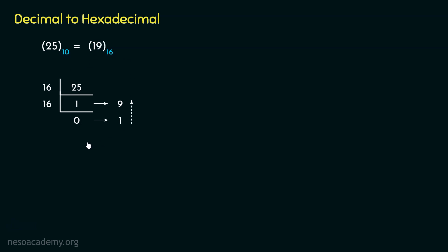Observe: when we perform the factorization of 25 using base 2, it involves many steps, but the same factorization involves fewer steps when done with 16, a higher base. And we can convert any hexadecimal value to its equivalent binary very simply. If you recall the hexadecimal number system, every hexadecimal digit is nothing but a binary nibble — a sequence of 4 bits. So if you want to convert very large decimal values into binary, instead of factorizing with 2, we can do it using base 16 and then obtain the binary from the hexadecimal result.